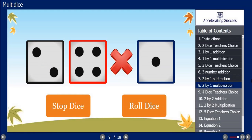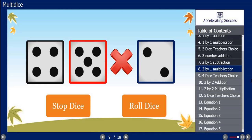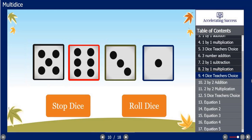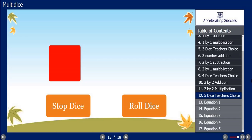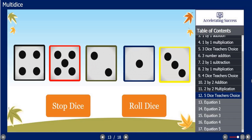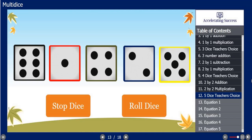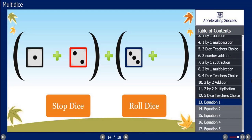We have 2x1 multiplication, 4 die teacher's choice, 2x2 addition, 2x2 multiplication, 5 die teacher's choice, and then if you really want to get creative, especially for your mental math, you can do various equations.